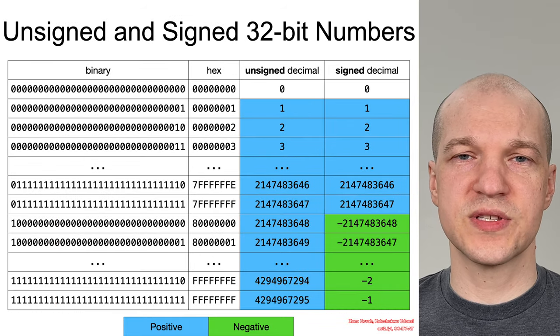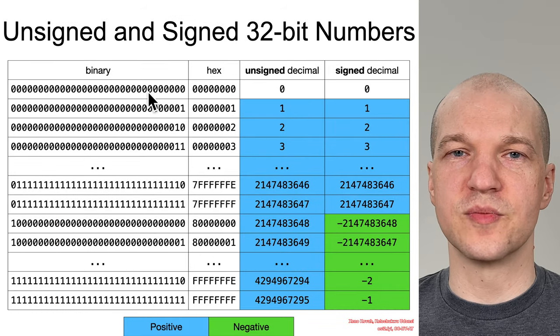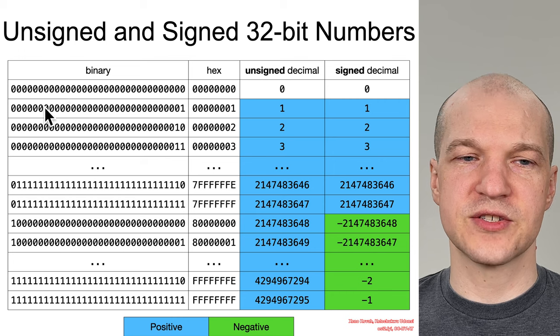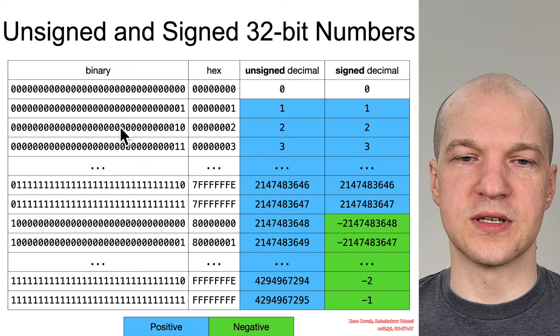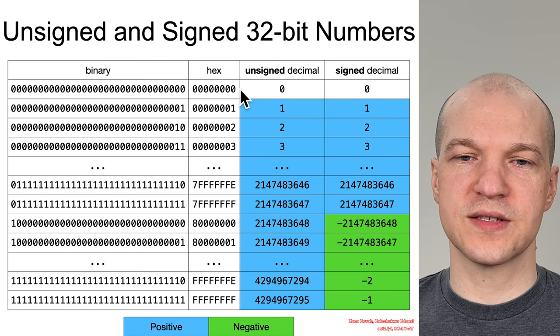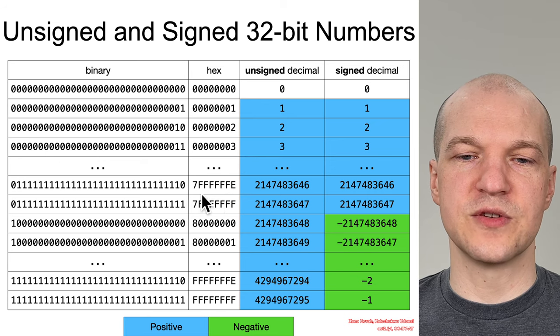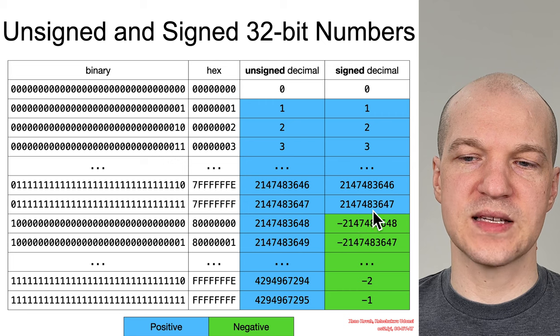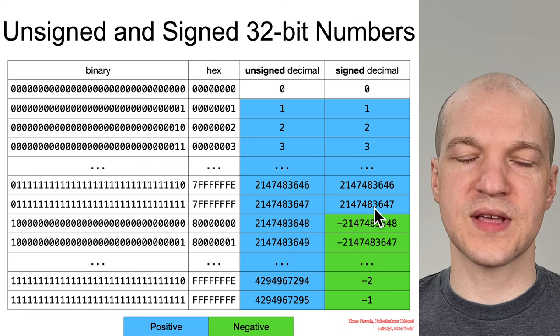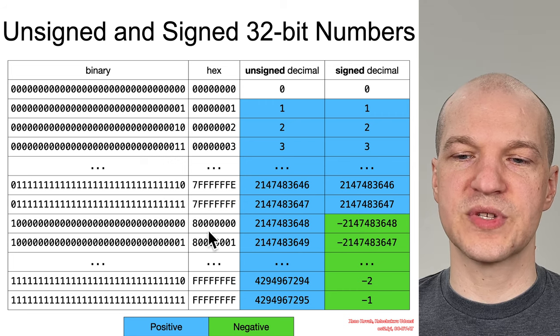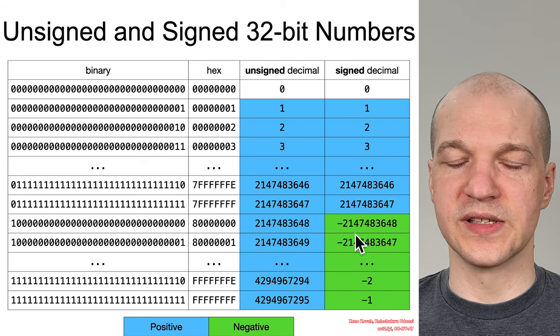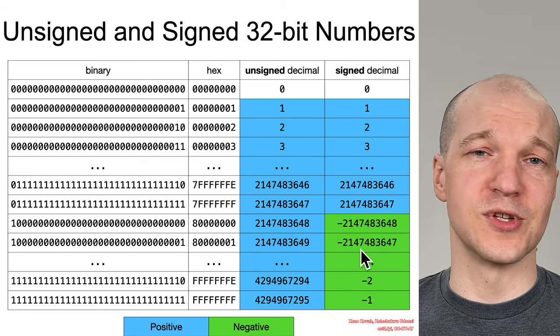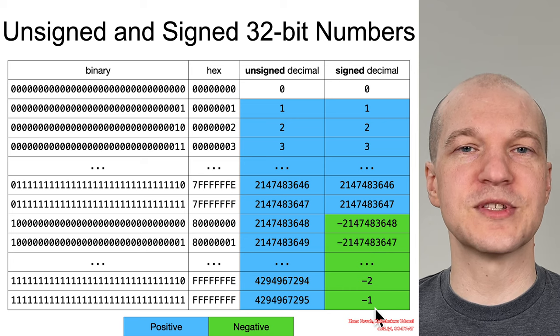And so the exact same principles apply if we were looking at 32-bit values or 64-bit values. It's just all 0s, all 0 and 1, 0, 1, 0, etc., 0, 1, 2, 3, and then up to 7FFE, 7FFF, that's the last positive value, 2 billion something, and then it flips around and becomes negative 2 billion something, and then negative 2 billion something minus 1, etc., all the way up to negative 1.